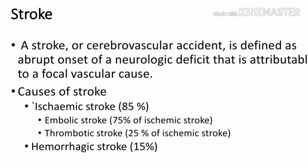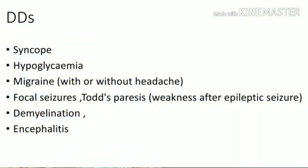The major types of strokes are ischemic and hemorrhagic. Now let's look at the differential diagnoses for stroke. Syncope can present like stroke — it is a sudden onset of weakness where the patient falls down, but then regains consciousness and becomes fully normal. Hyperglycemia and migraine can also present with stroke-like features.